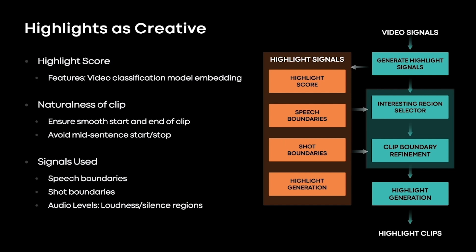Our preview generation process consists of three parts: highlight score generation, a post-processing step, and finally the clip generation step. The highlight score generation is a deep learning model that ingests low-level signals from the audio and video streams and predicts an interestingness score for every two seconds of the video. The post-processing step uses these scores to identify regions to select based on the target duration, and fine-tunes the start and end regions to avoid abrupt cuts. The final step creates the new clip with various effects such as fade-outs, looping, and transition through black frames — clearly demarcating where the preview ends and the main video begins.